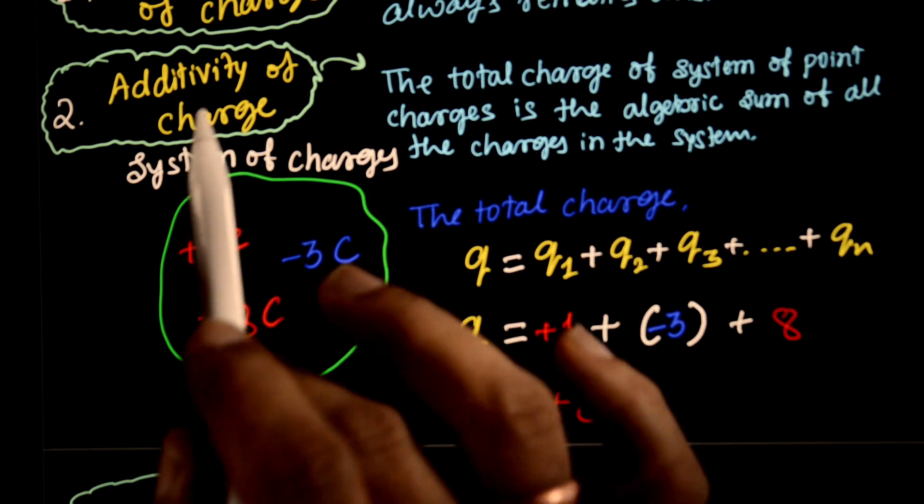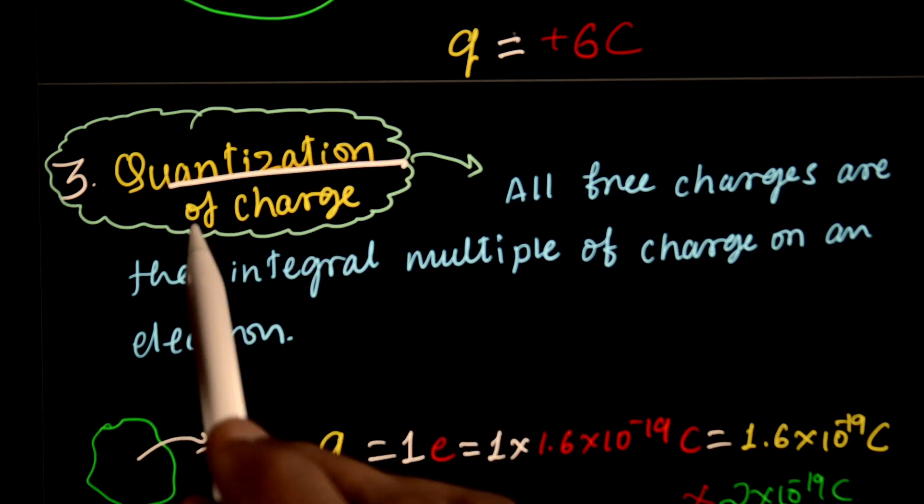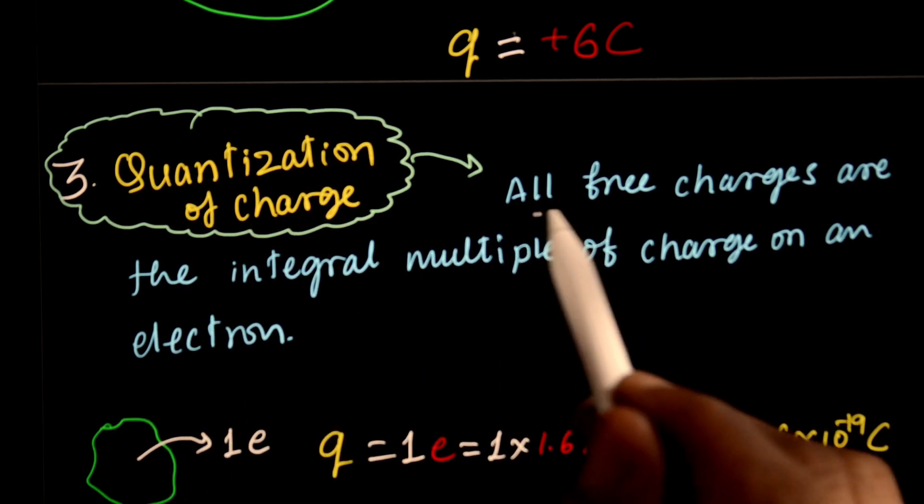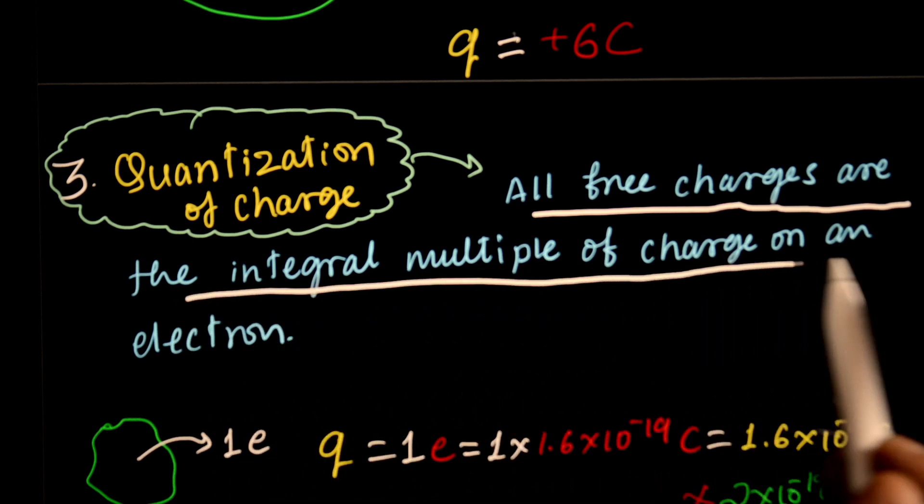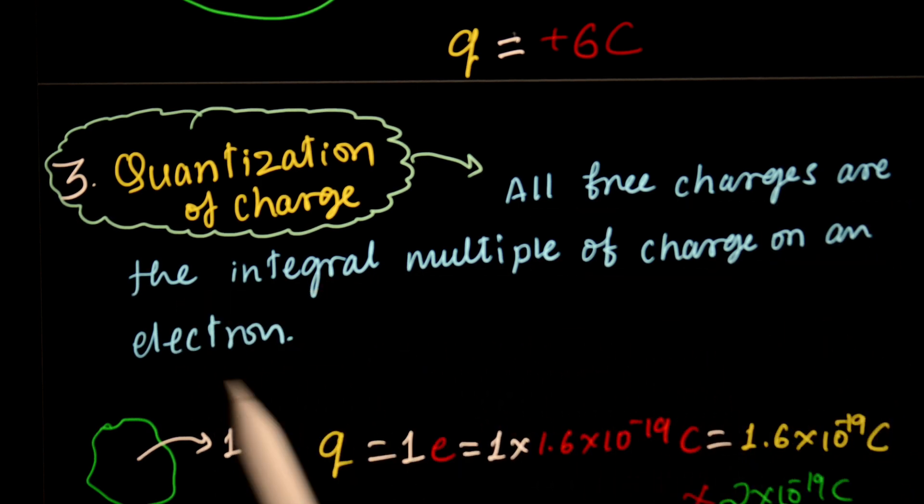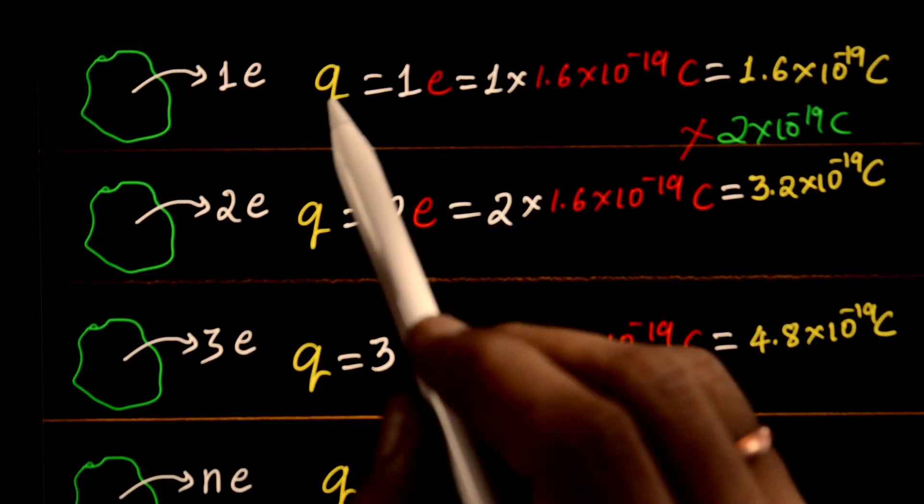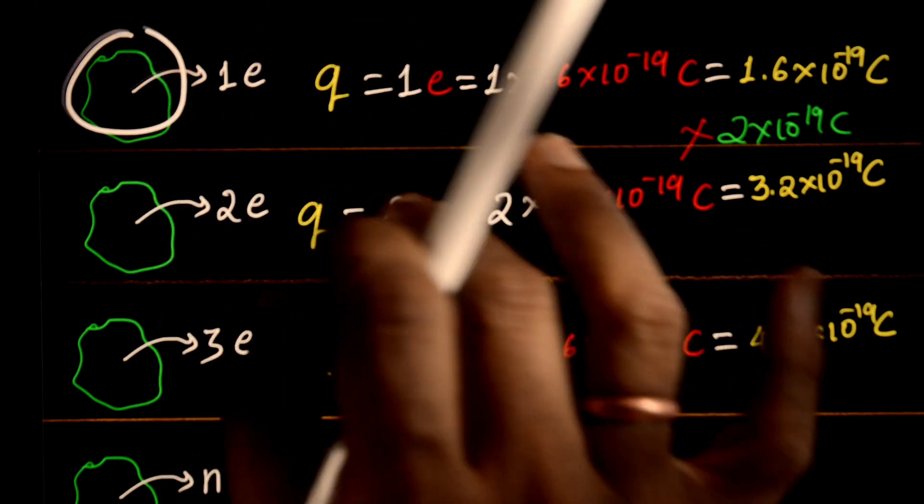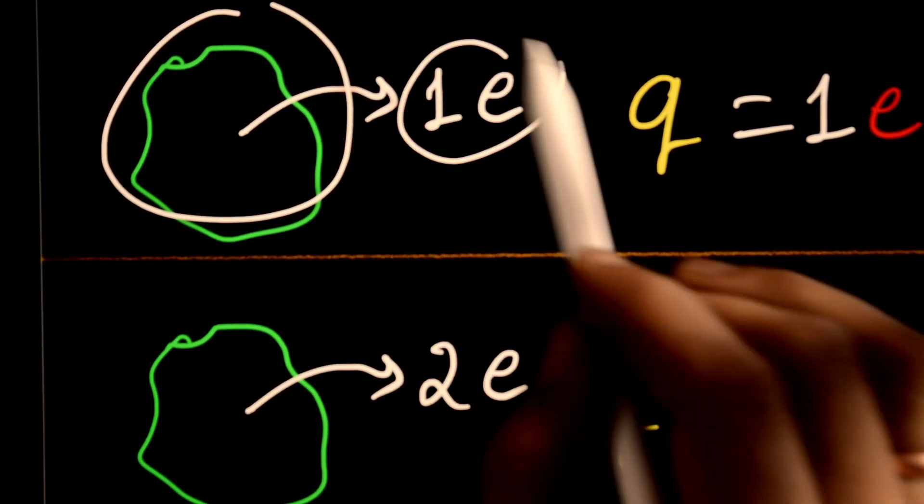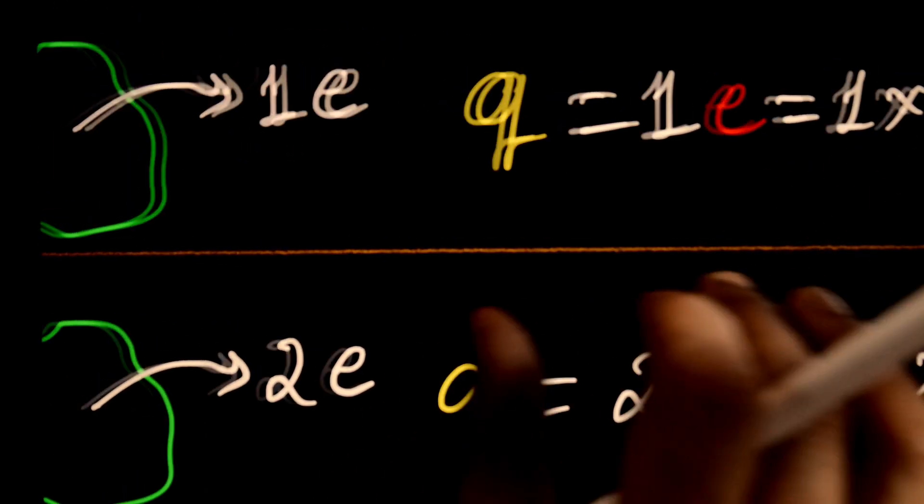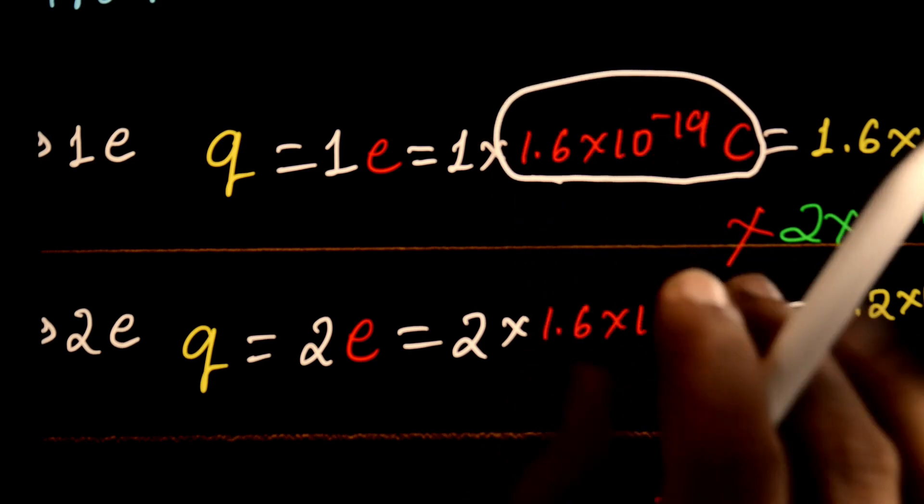That is additivity of charge. And the third property is quantization of charge. What do you mean by quantization? All free charges are integral multiples of the charge on an electron. Let us take an example. Suppose this is one system and we remove one electron.